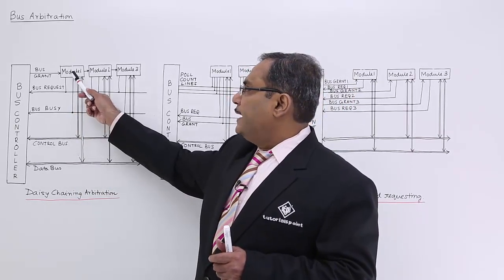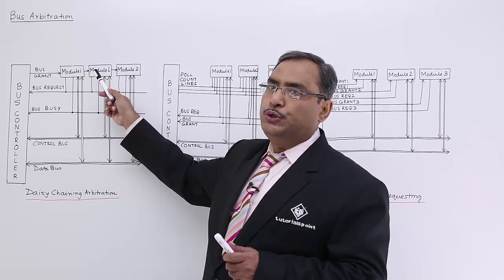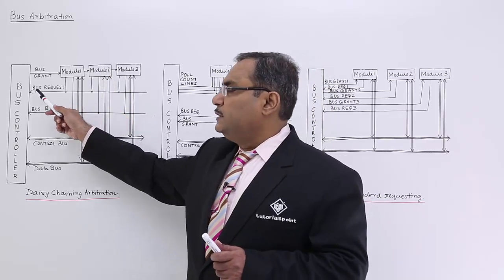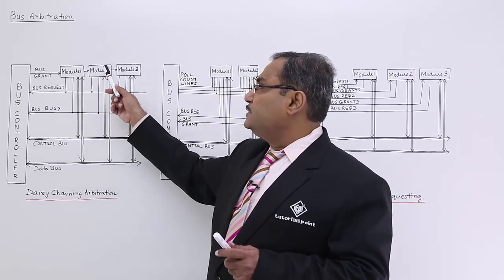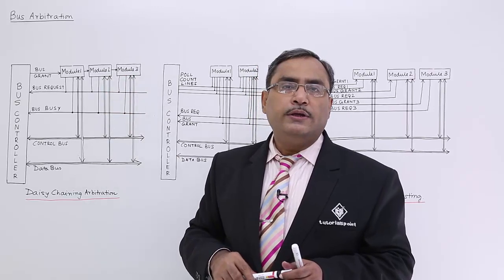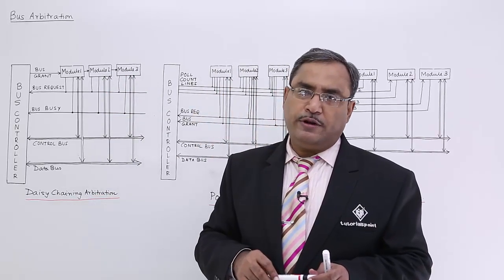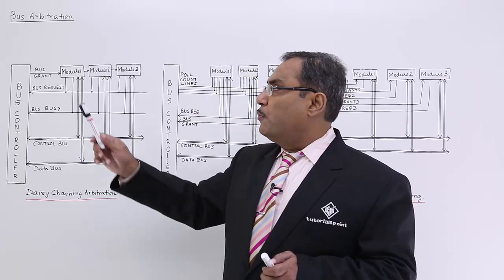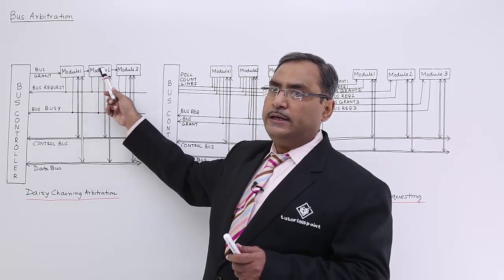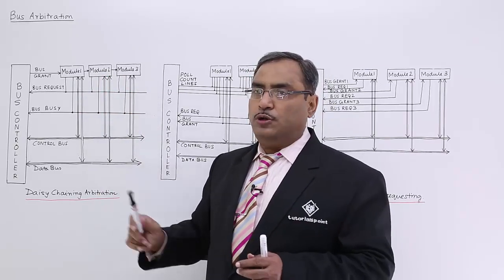But if module one did not demand bus access, then this bus grant line will be passed to the next module — module two. If module two was not responsible for enabling the bus request line, then the bus grant line will pass to module three. That is why it is called daisy chaining arbitration. Module one has higher priority than module two, and module two has higher priority than module three, and so on.